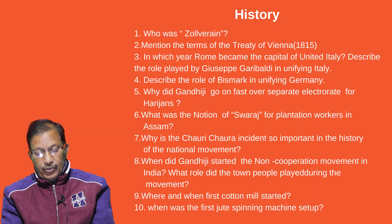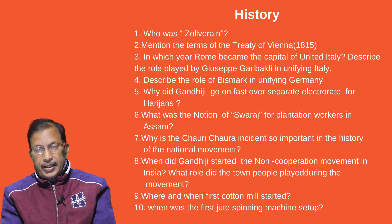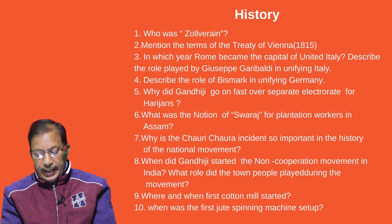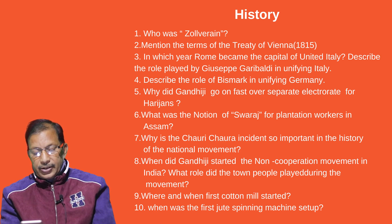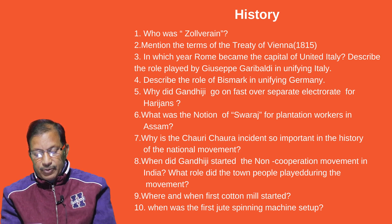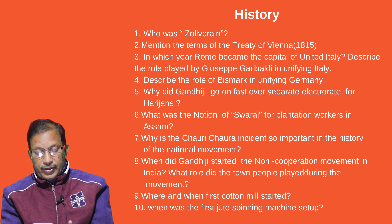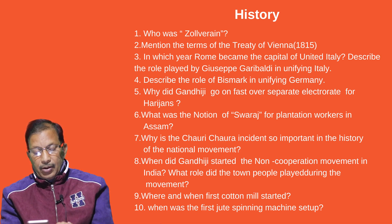Now we go to History. Who was the librarian? Mention the terms of the Treaty of Vienna 1815. In which year did Rome become the capital of unified Italy? Describe the role played by Giuseppe Garibaldi in unifying Italy. Describe the role of Bismarck in unifying Germany. Why did Gandhi go on fast over a separate electorate for Harijans? What was the notion of Swaraj for plantation workers in Assam?